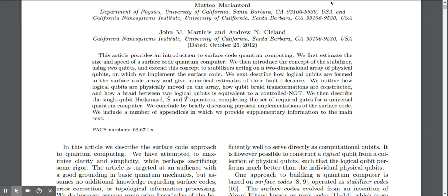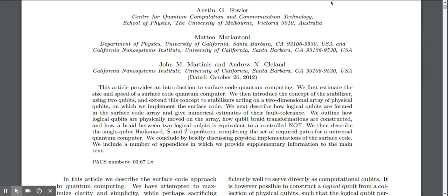This article provides an introduction to surface code quantum computing. We first estimate the size and speed of a surface code quantum computer. We then introduce the concept of the stabilizer, how logical qubits are formed in the surface code array, how they are physically moved, how qubit braid transformations are constructed, and how a braid between two logical qubits is equivalent to a controlled NOT. We then describe the single qubit Hadamard, S and T operators.